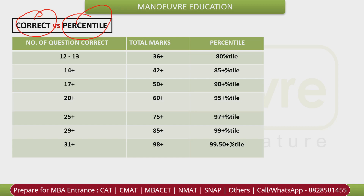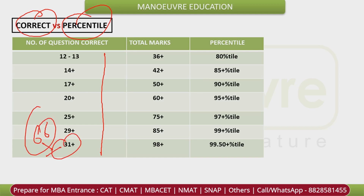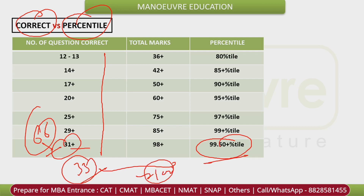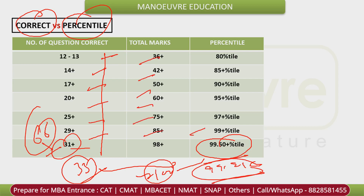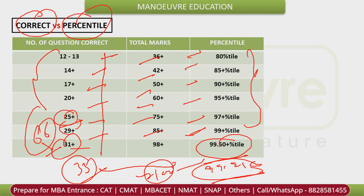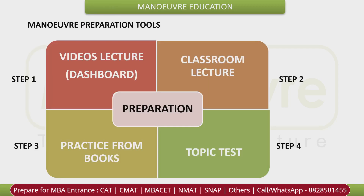Regarding how many questions correct leads to what percentile — overall there are 66 questions. If you have 13 questions correct this will be a certain percentile, and for 99-plus percentile you need around 29 to 30 questions correct. Fix your target and start your preparation for CAT 2024.